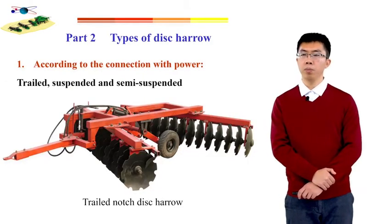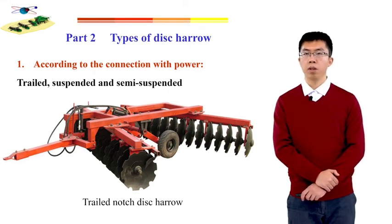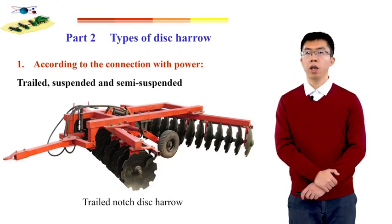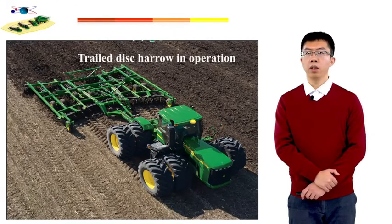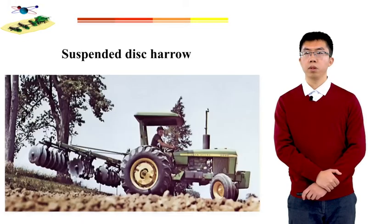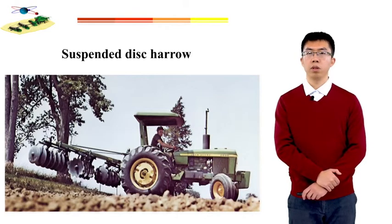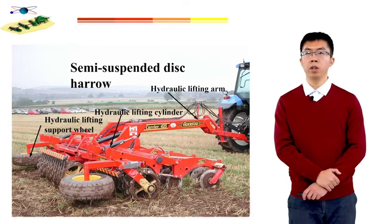After looking at those pictures, we will talk about the different types of disc harrow. According to the connection with the power, the disc harrow could be classified into trailed, suspended, and semi-suspended — the same as the moldboard plow. This slide shows a trailed disc harrow, and this picture shows a trailed disc harrow in operation. This picture shows the suspended disc harrow, where the harrow is borne by the tractor. This picture shows a semi-suspended disc harrow.